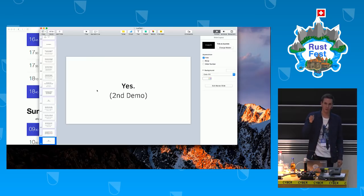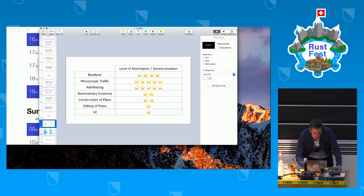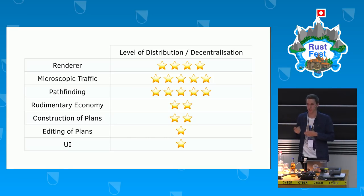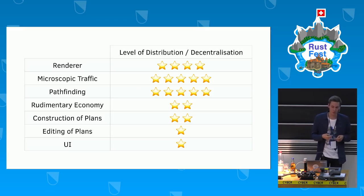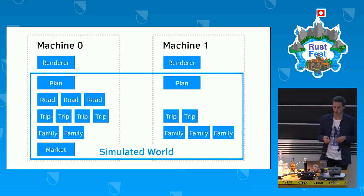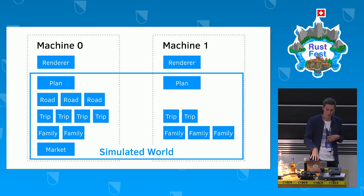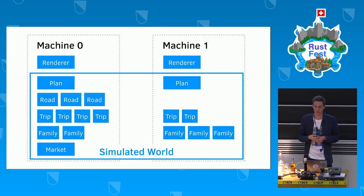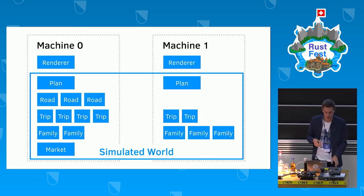Thank you very much Veronica for being my player two. Just to give you an idea of how well all the different parts of the game are already distributed: the renderer is centralized, the traffic simulation and pathfinding are already well-distributed, and other stuff I still have to work on. In this demo, both laptops had a renderer, we each had our individual plan we were editing, all the roads and cars lived on my machine but were also rendered on hers. The trips representing people's journeys could exist on both laptops, same for the families, but there's only one economic market for now. Actors really don't know if they're talking to another actor on the same machine or not.